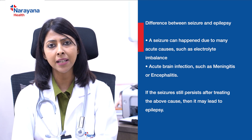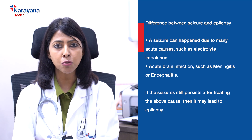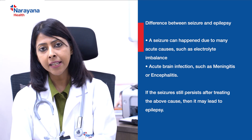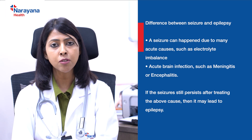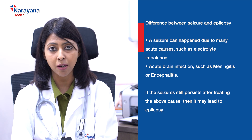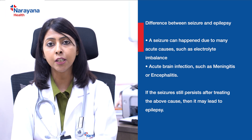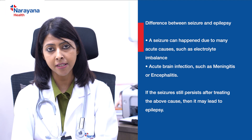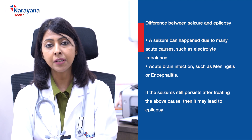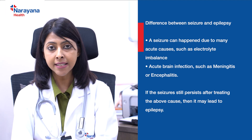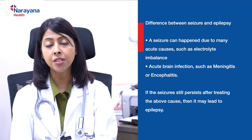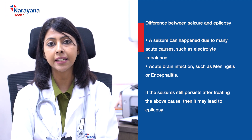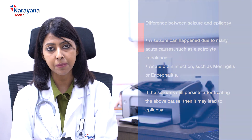Acute causes include electrolyte imbalances like low calcium, low sodium, low magnesium, or high calcium, high sodium, high magnesium, etc., or acute brain infections like meningitis or encephalitis. However, if we treat the cause and the seizures are still repetitively happening, then it may lead to something called epilepsy.